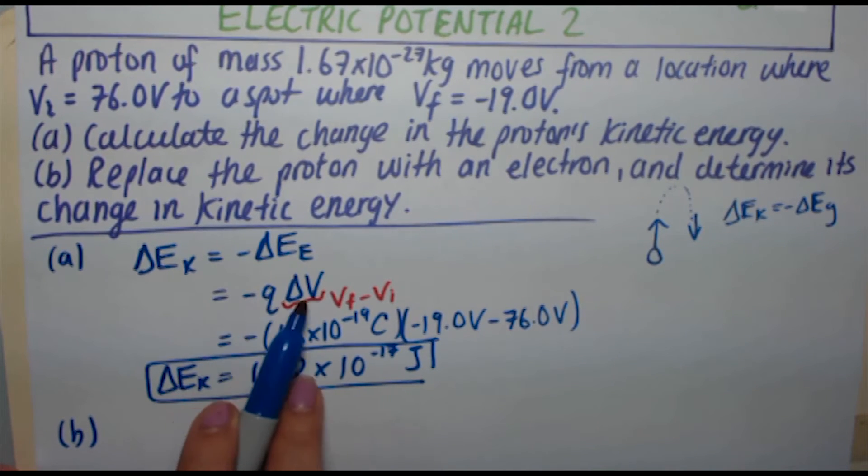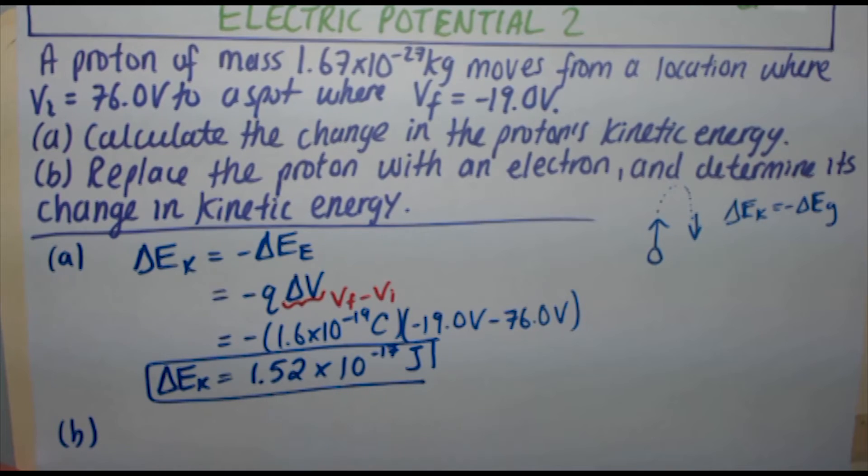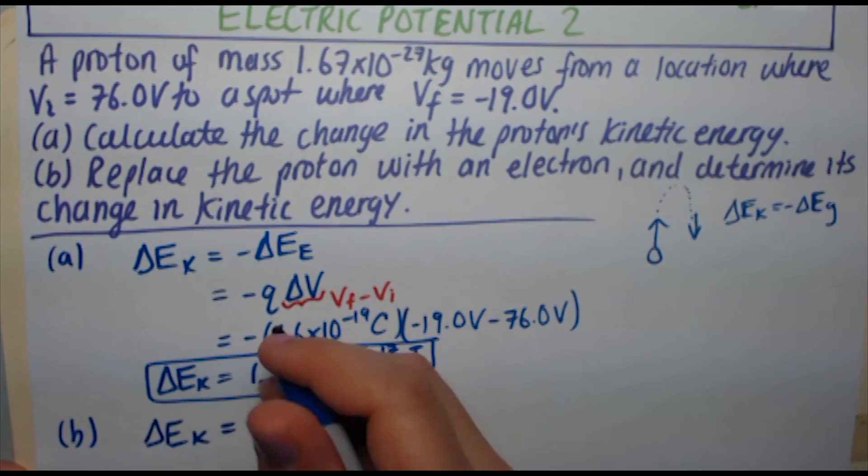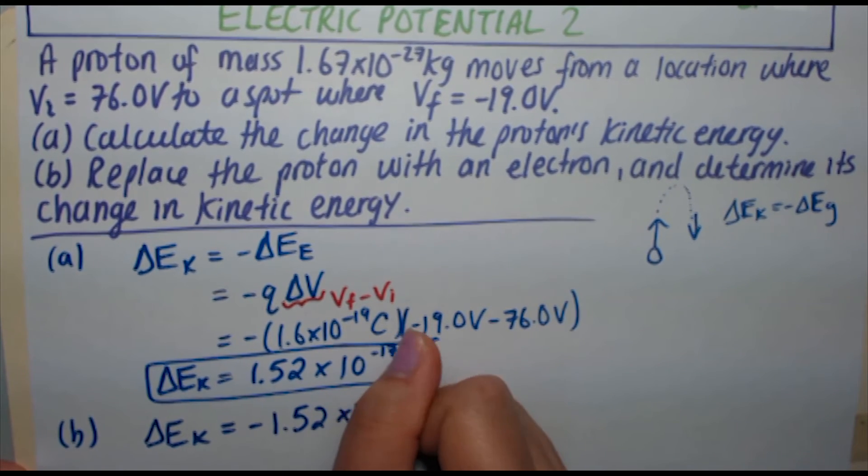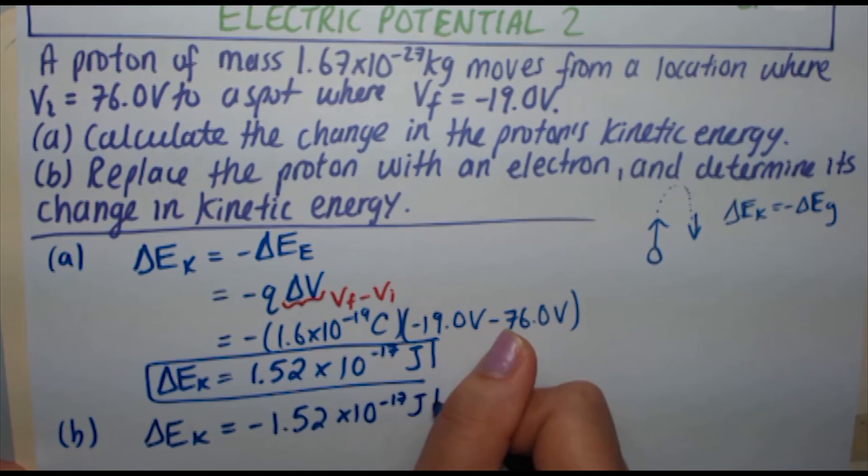What's going to happen is you're going to end up with an extra negative here because the electron charge is minus 1.6 times 10 to the minus 19 coulombs. So that extra minus is going to end up making your delta Ek minus instead of plus. For the electron, the change in kinetic energy will be minus 1.52 times 10 to the minus 17 joules.